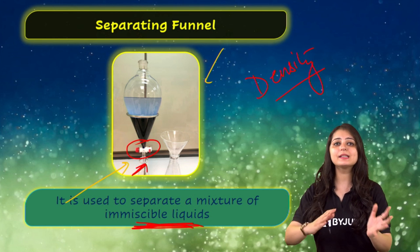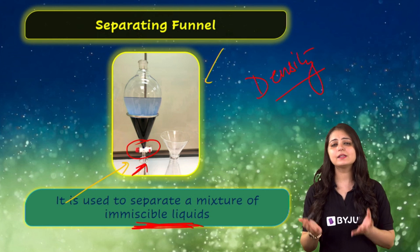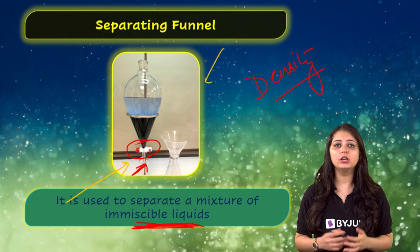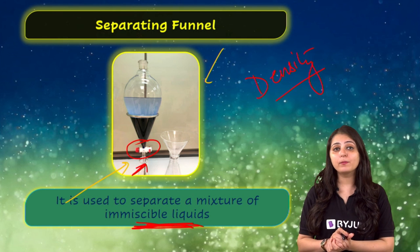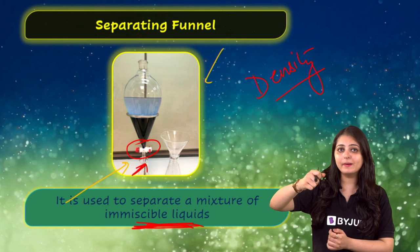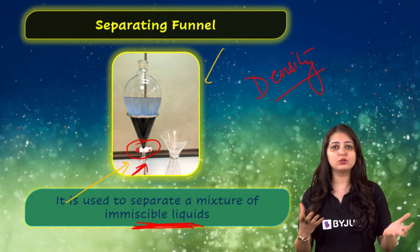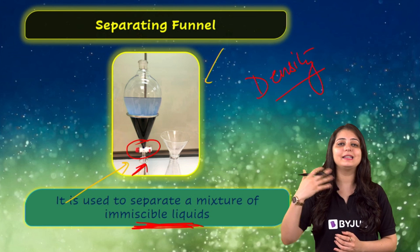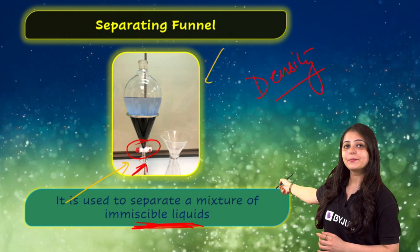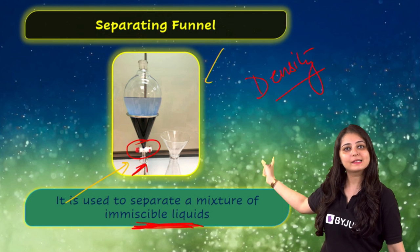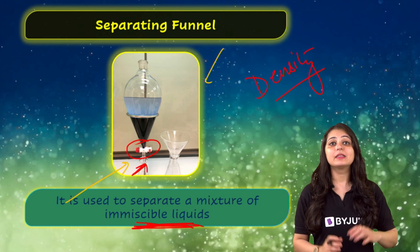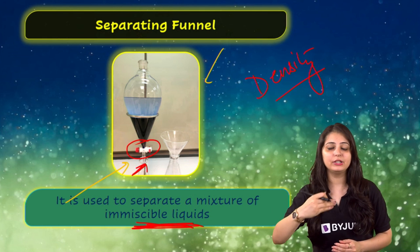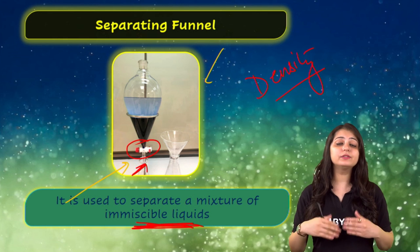How do we separate them using a separating funnel? It's a very simple process. Just pour the mixture of oil and water into the separating funnel with its stopcock closed. The stopper needs to be closed initially to avoid any leakage — if the stopcock is open, the mixture can leak. Make sure the stopcock is closed initially.